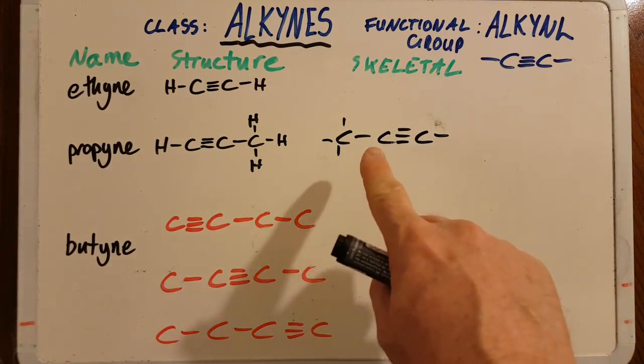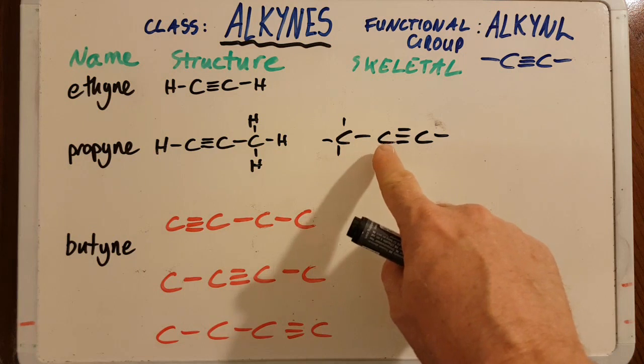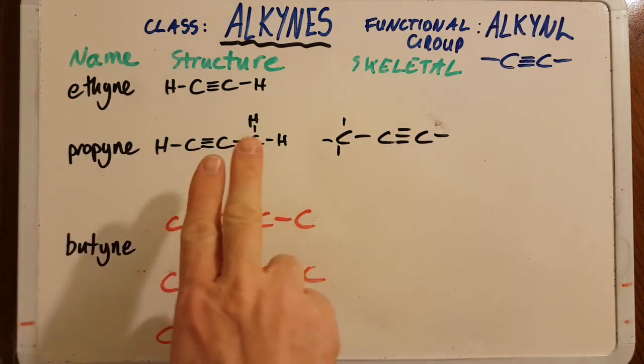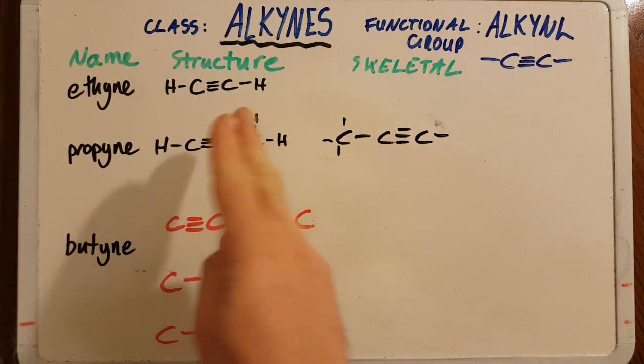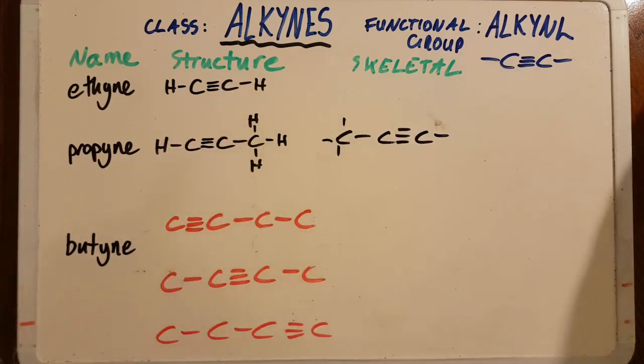This would be 2-propyne, the double bonds between the second and the third. No, no, no, these are the same. This and that are just rotated versions of the same molecule. So since it's unambiguous you can just call it propyne.